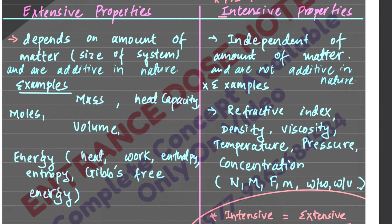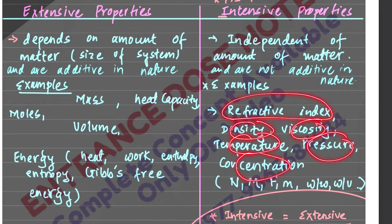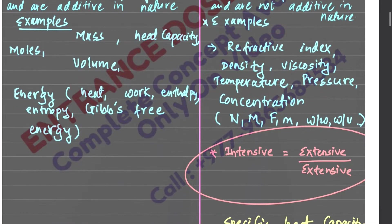And we have intensive properties such as refractive index, density, viscosity, temperature, pressure, concentration, etc. These also include normality, formality, molality, W/W, W/V, etc.